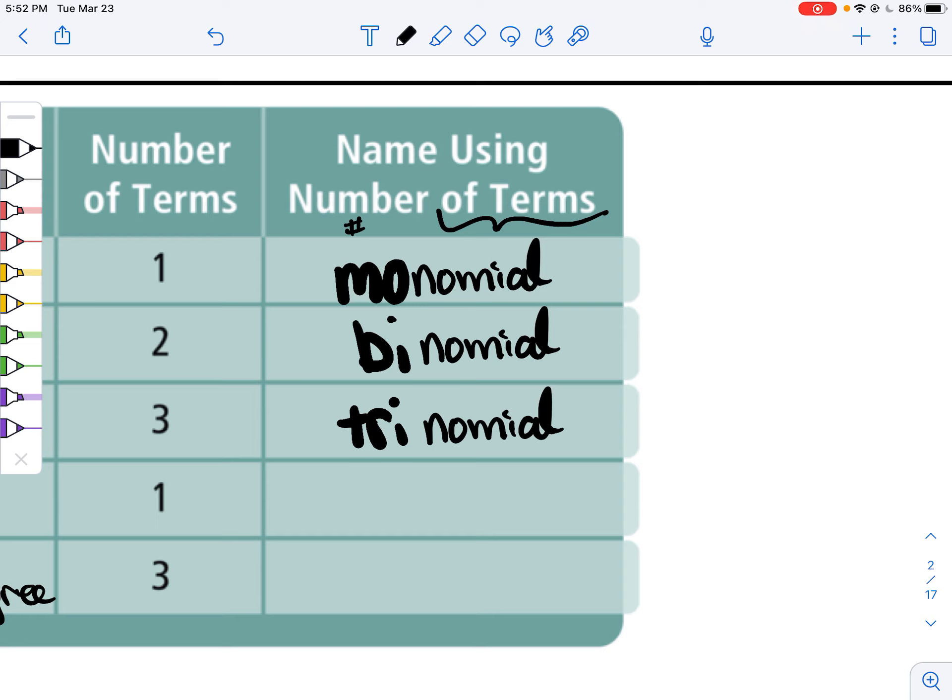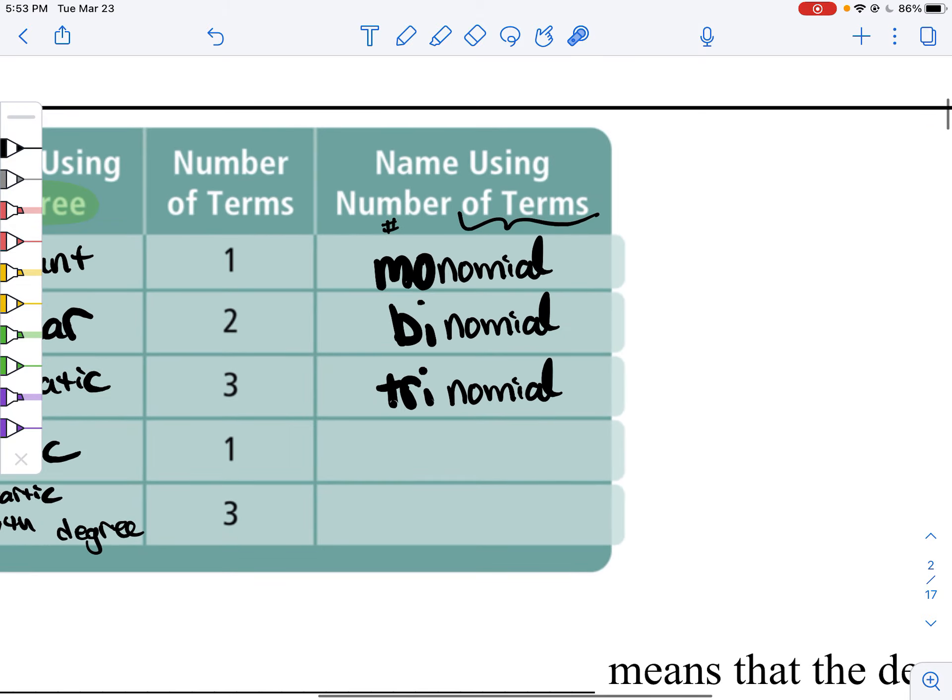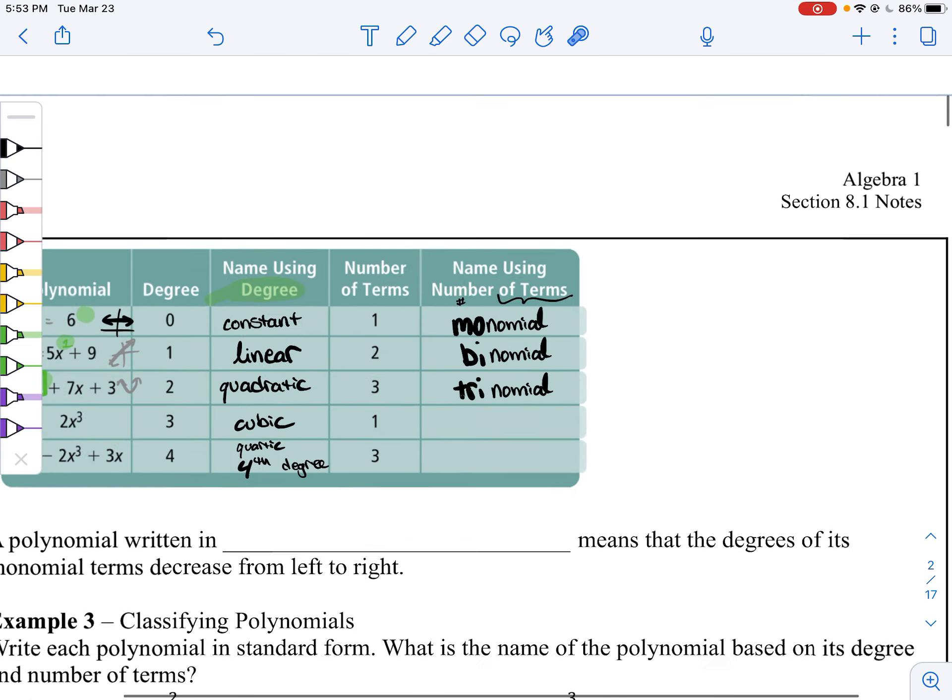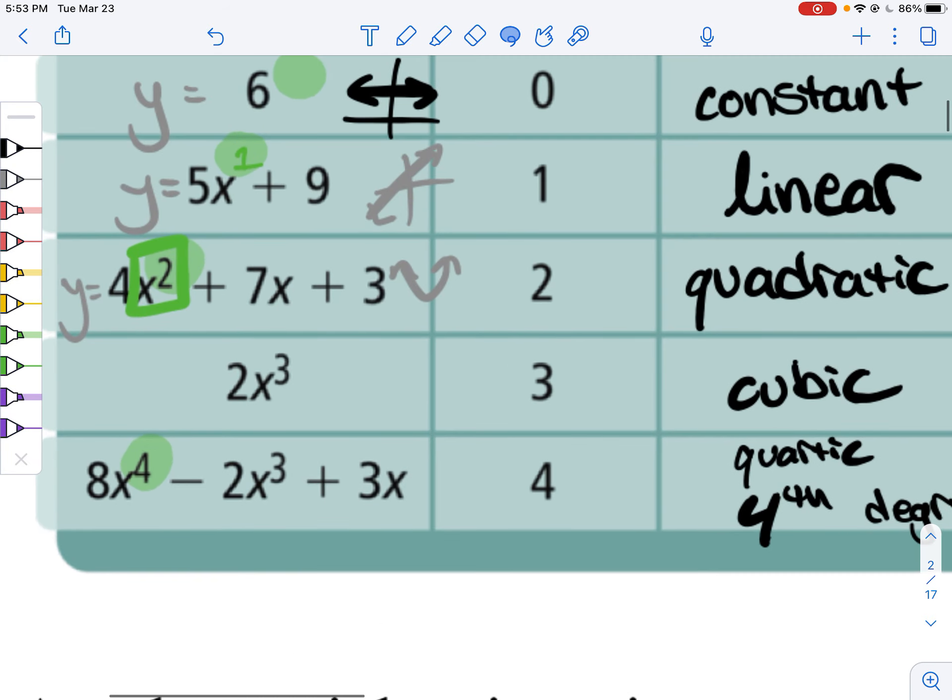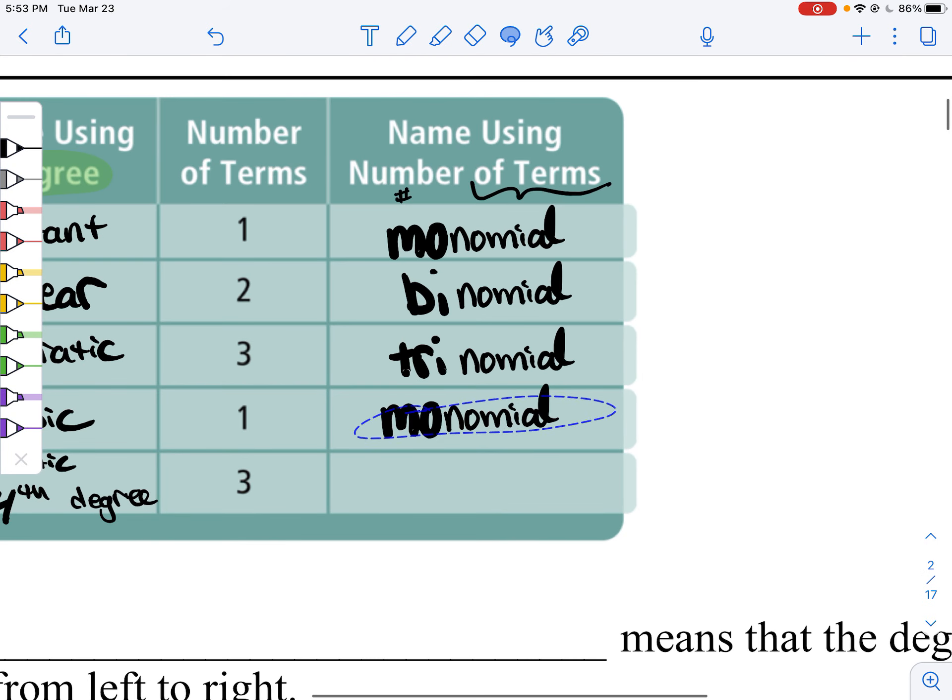There is no more fancy term after that. So, we wouldn't say it's like a quadrinomial. I've literally never heard that before. Since this guy had one term, we are back to monomial. And this guy has three terms. So, this is a trinomial.